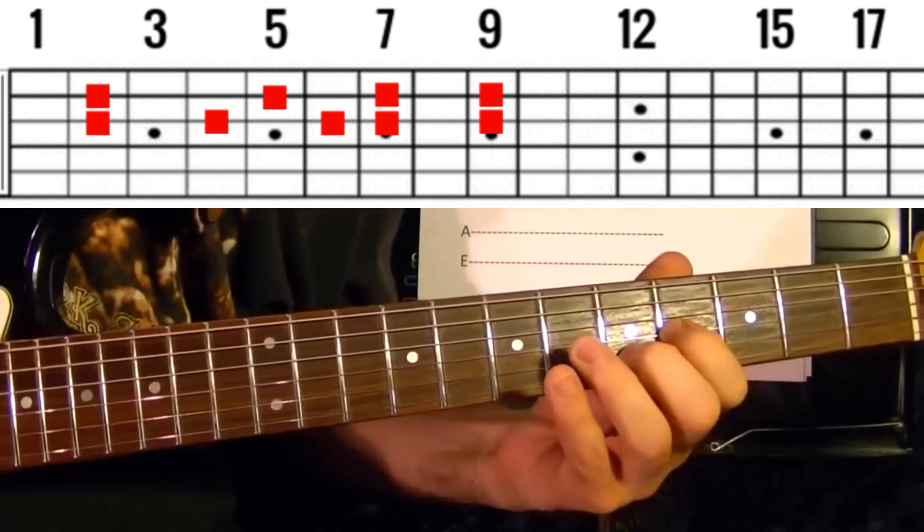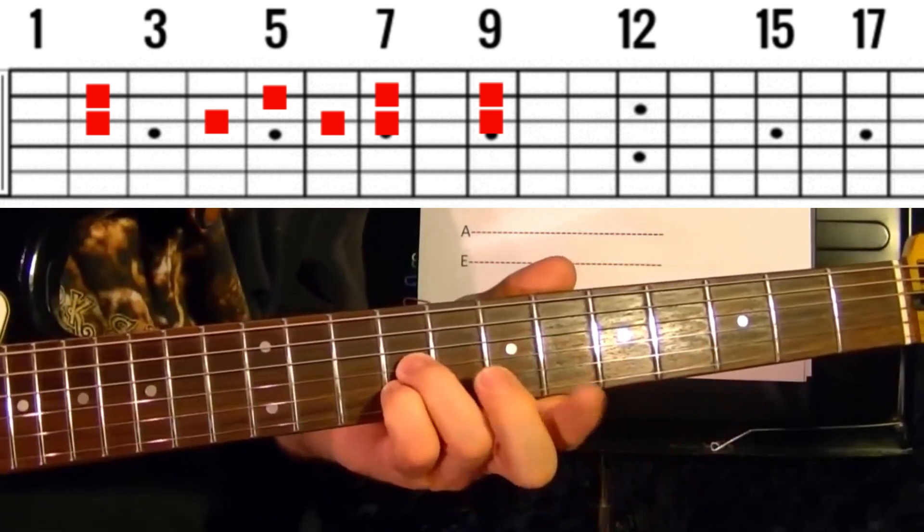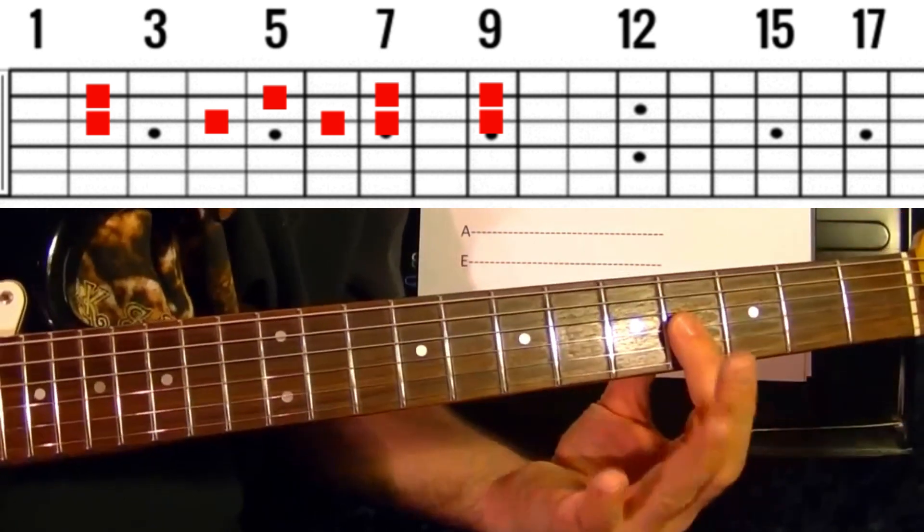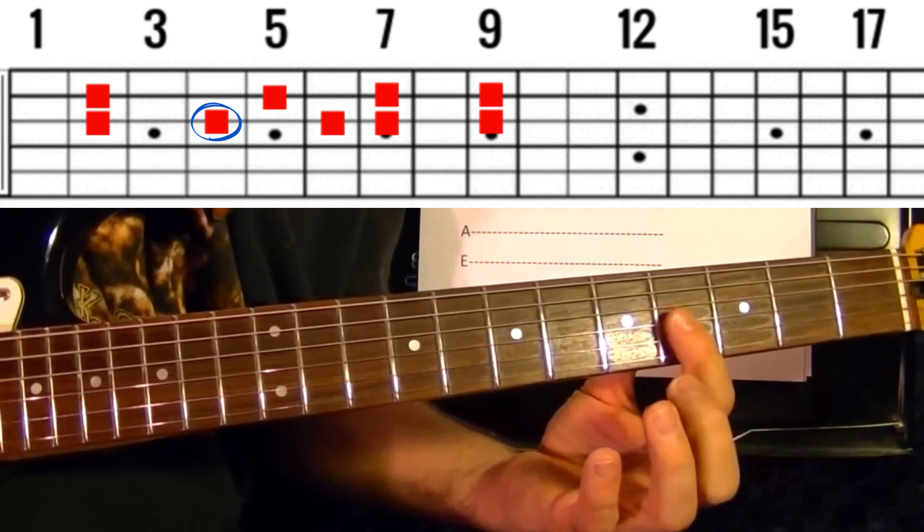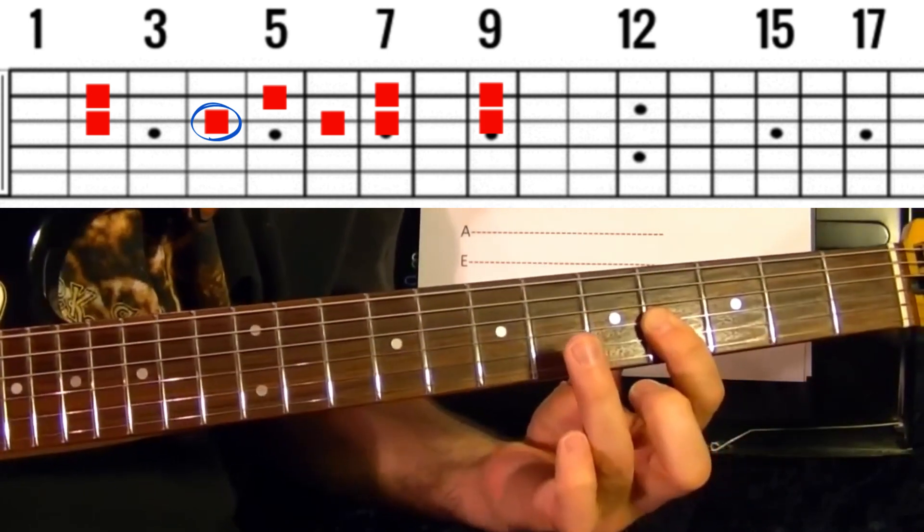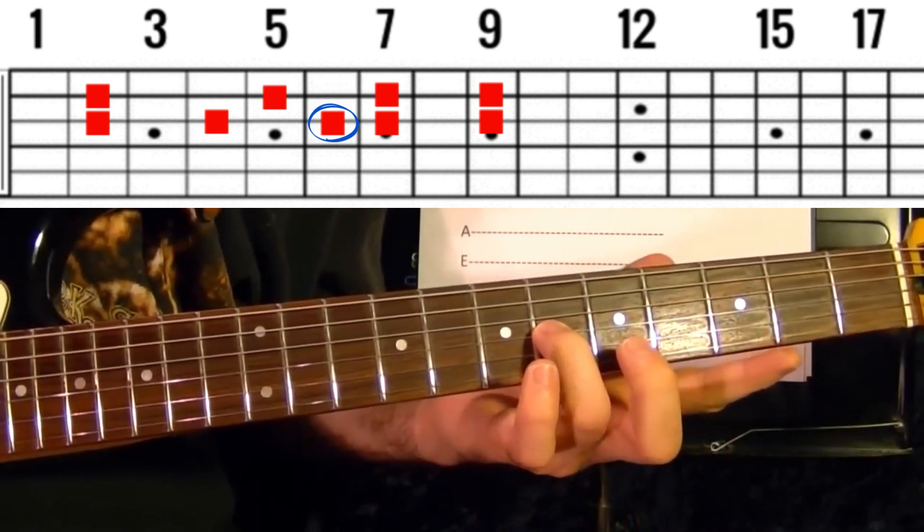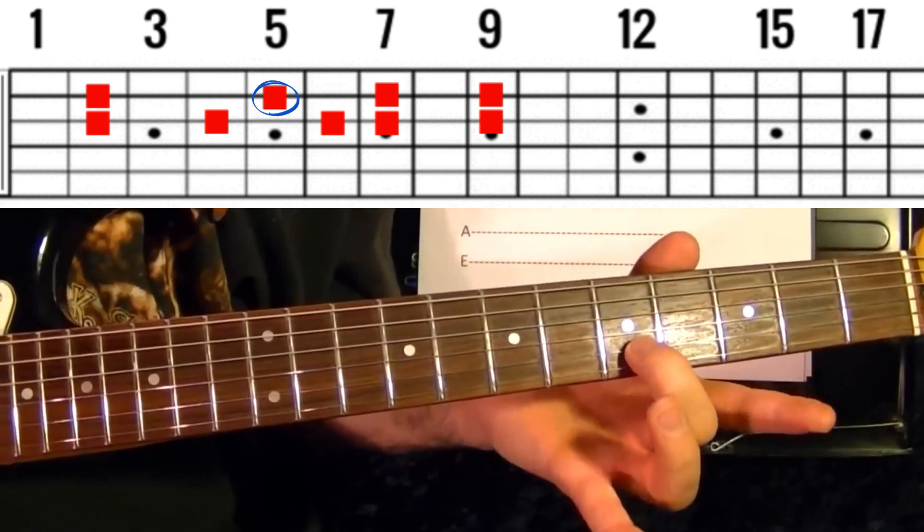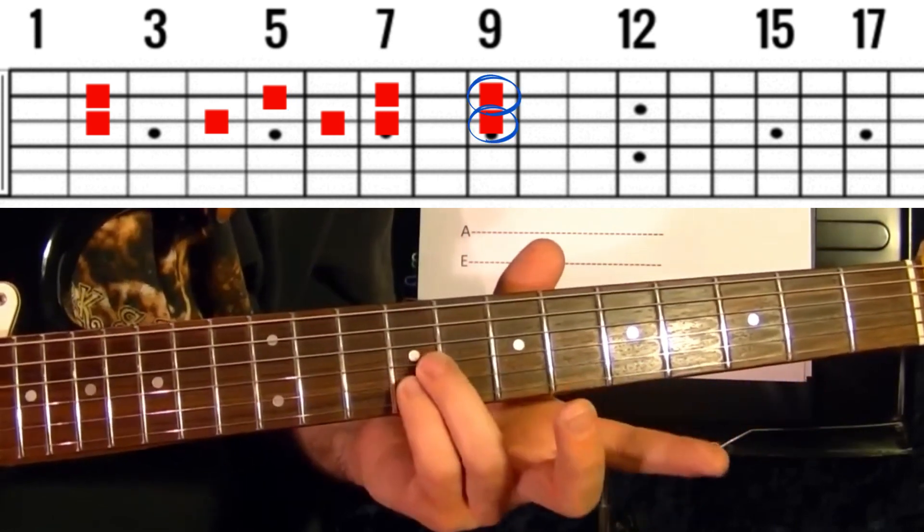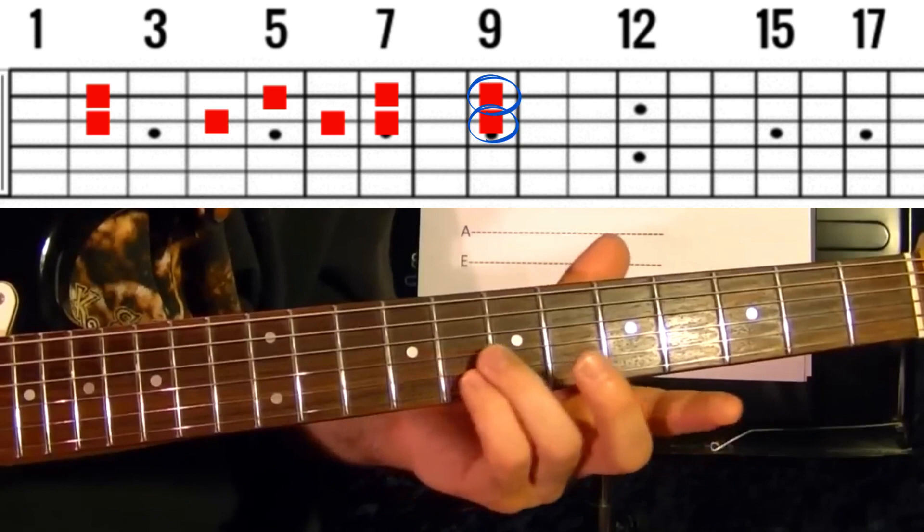Your next part is this: third string fourth fret, again, sixth fret, second string fifth fret, and the second and third strings slide up to the ninth fret.